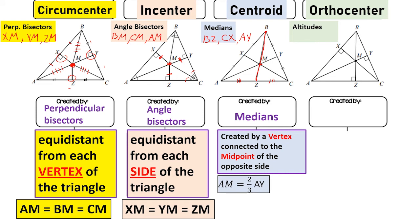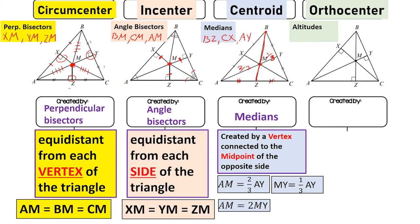When looking at medians, note that for median AY: AM is two-thirds of AY, and MY is one-third of AY. We can also say that AM is twice MY. So for example, if AM is 4, then MY would be 2, because MY is half of AM. These are the key relationships to use when finding measures of medians.